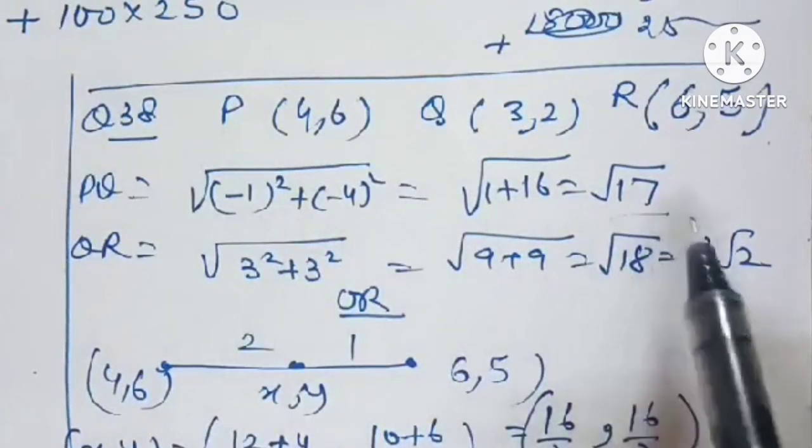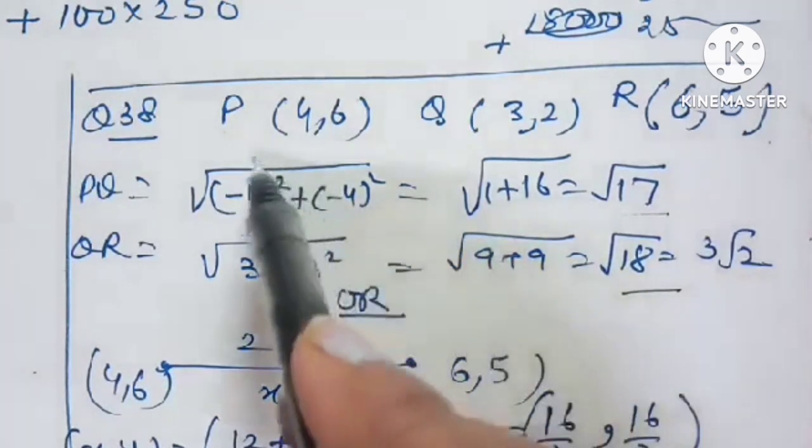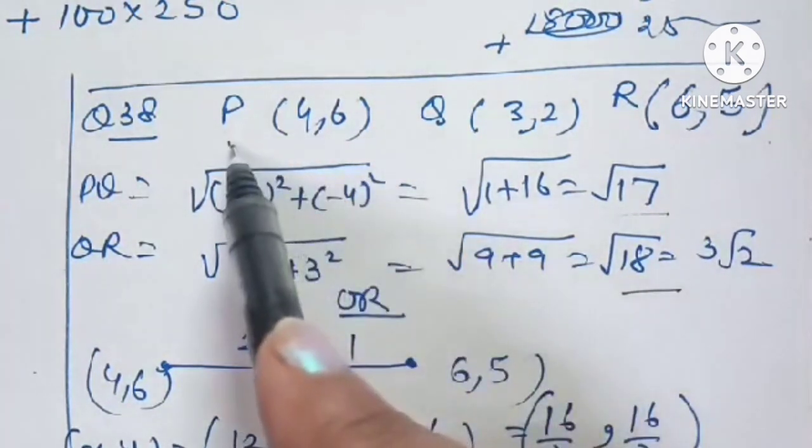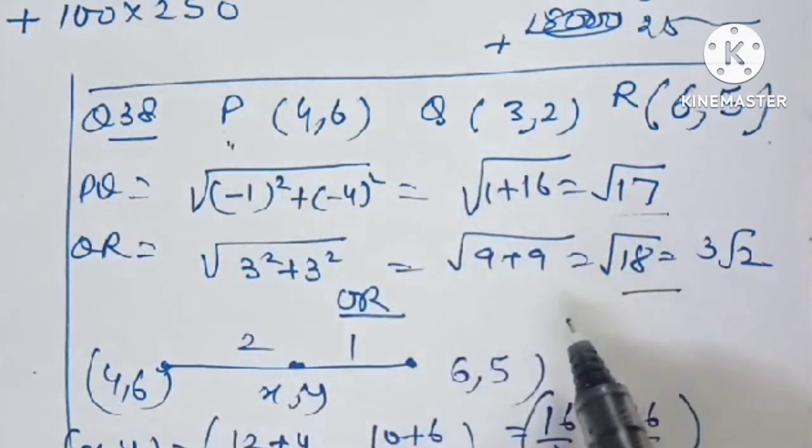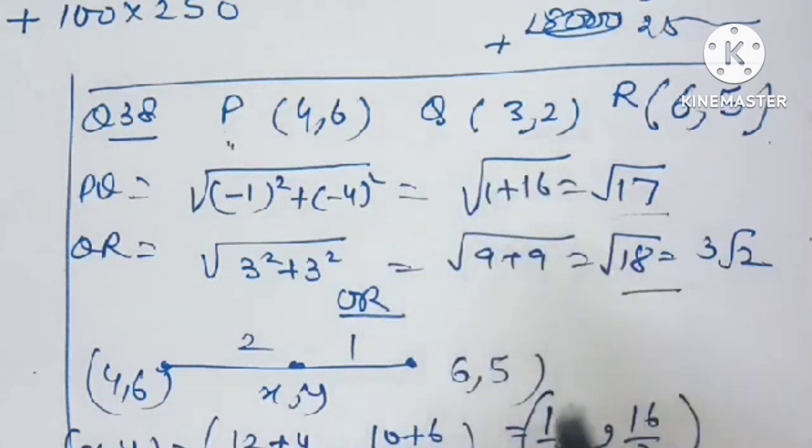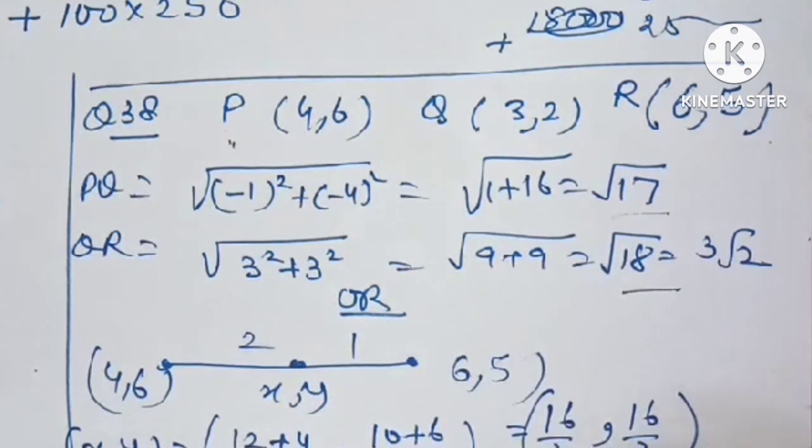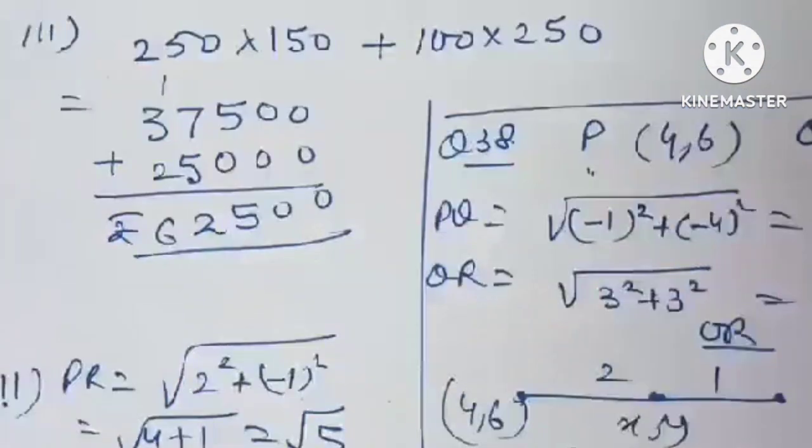Now, let's come to question number 38. In the first part, coordinates of P are 4, 6, Q is 3, 2, and R is 6, 5. For second part, PQ is root 17, and QR is root 18, that is 3 root 2. And in its or part, the answer comes out to be 16 by 3, 16 by 3.